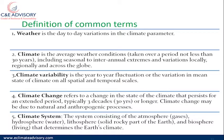What is climate? Climate is the average weather conditions taken over a long period of time, not less than 30 years. It includes seasonal patterns — such as rainfall season and dry season — and also inter-annual extremes and variations locally, in the region, and across the globe. That's what we call climate.